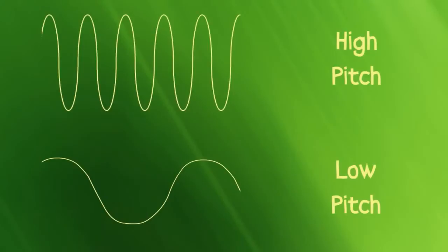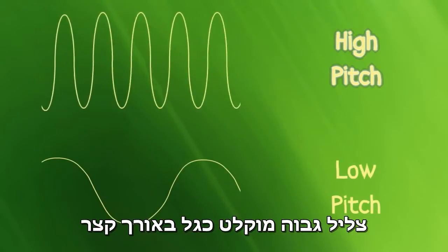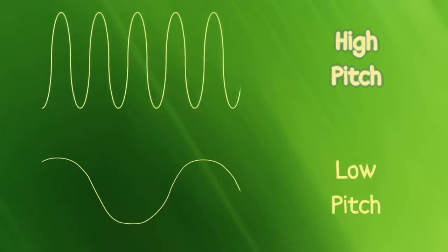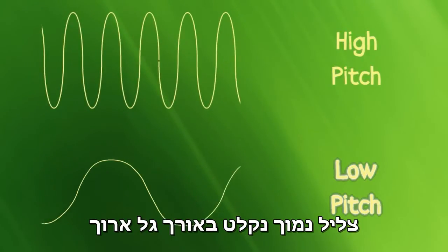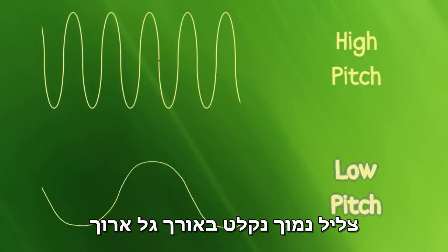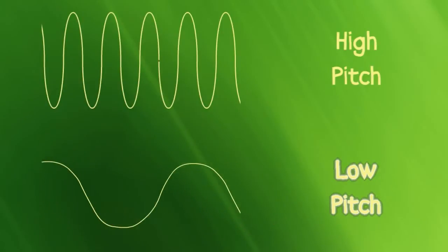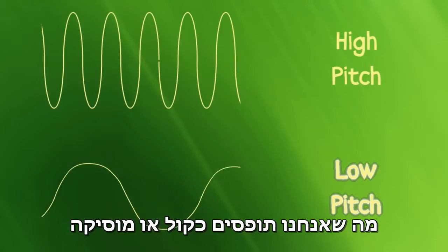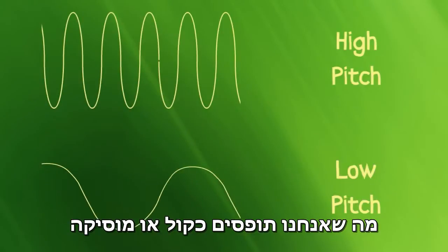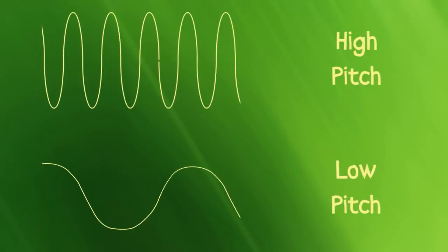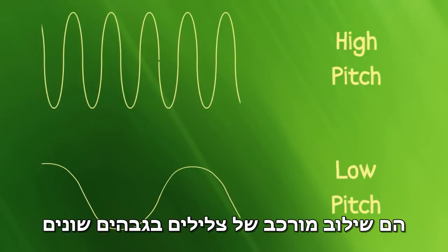A high-pitched sound is recorded as a shorter wave, and a low-pitched sound is a longer wave. What we associate as voice or music are all a complex combination of different pitches.